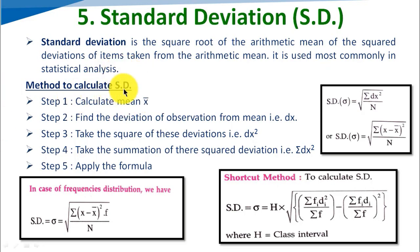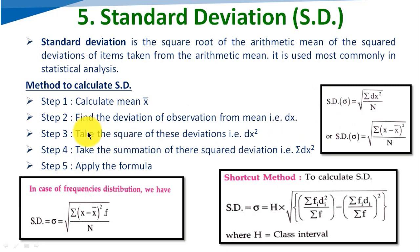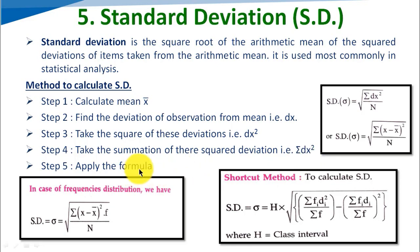Here we will see how to calculate it step by step. First, we will calculate the mean x-bar. Then we will calculate the deviation of each observation from the mean, that is dx = x minus x-bar. Then we take the square of this deviation, dx squared. Then we take the summation of the squared deviations, that is sigma of dx squared.